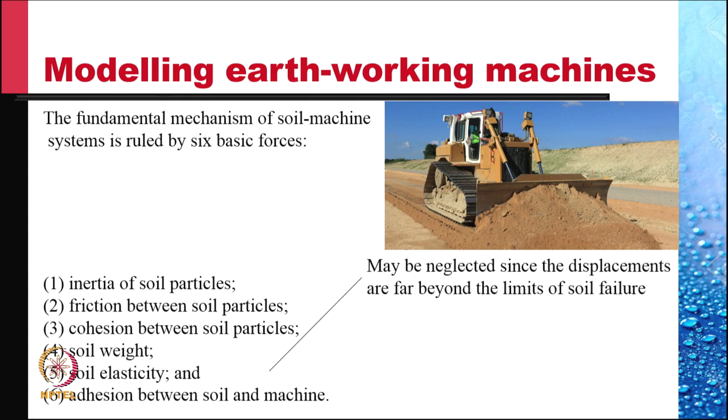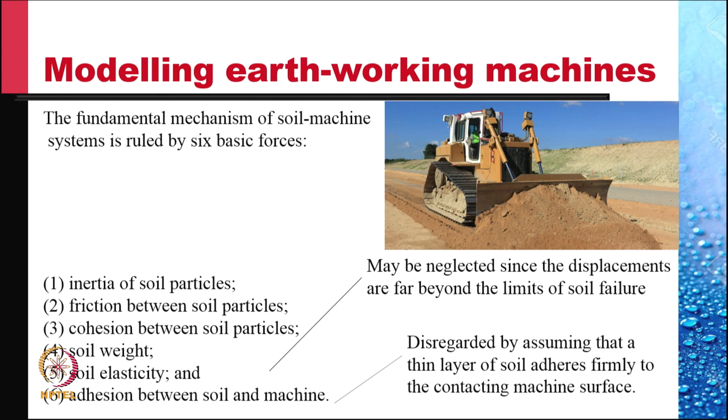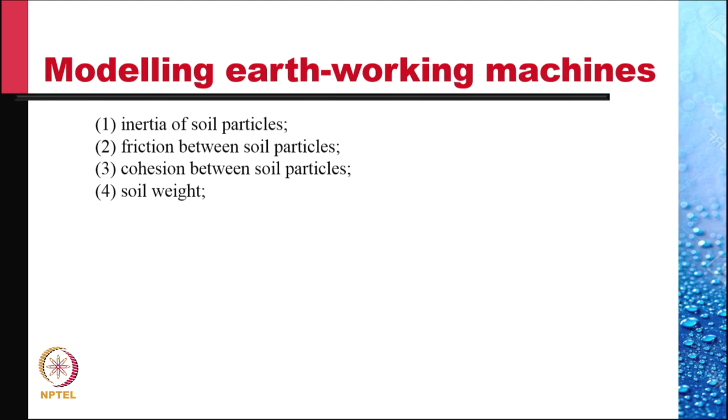Fifth, the elasticity of the soil, and sixth, the adhesion between soil and the machine. Since the soil is being worked to this extreme and the soil failure takes place in such machine interactions, we may neglect soil elasticity completely since the displacements are far beyond the limit of soil failure. Similarly, the adhesion between soil and machine can be disregarded by assuming that a thin layer of soil adheres firmly to the contacting machine surface.